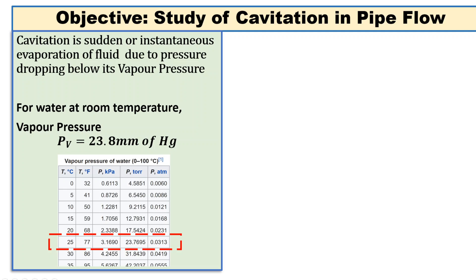In kPa, it is 3.17 kPa, or in case of atmospheric pressure, it is 0.03 atm.